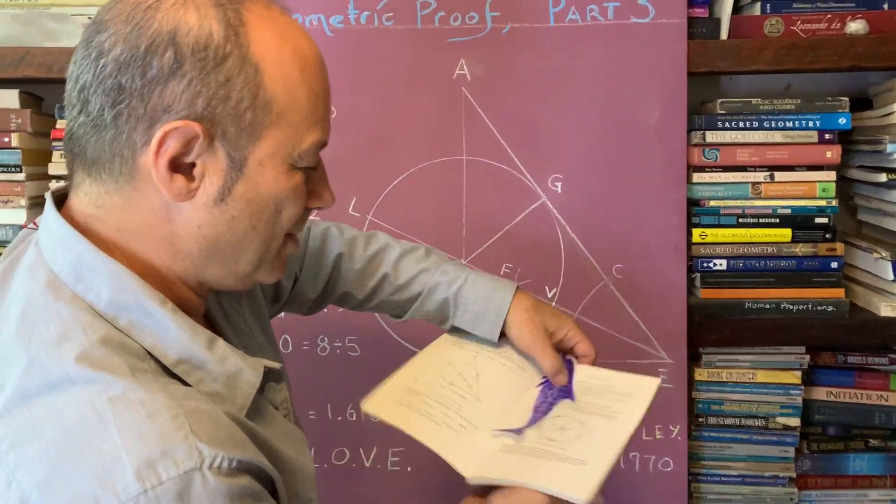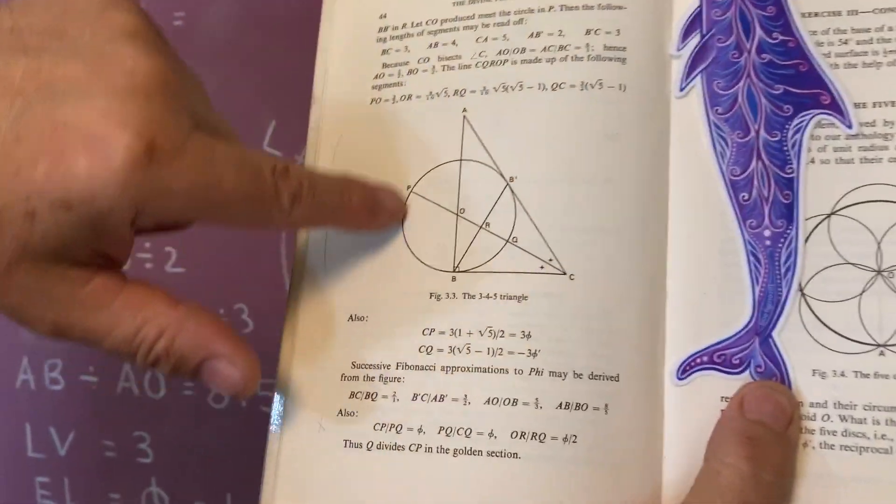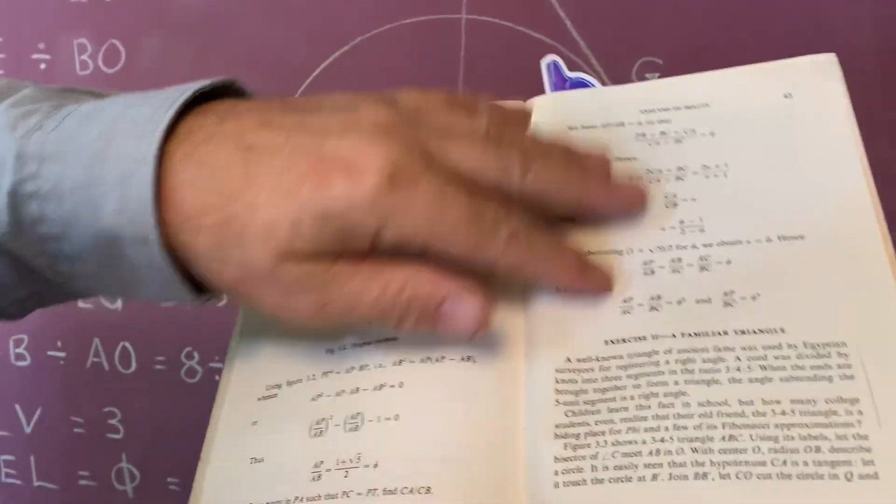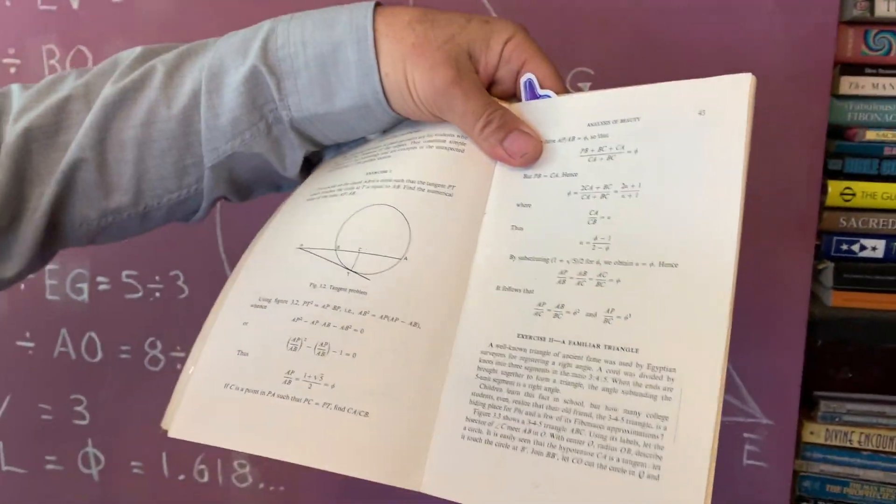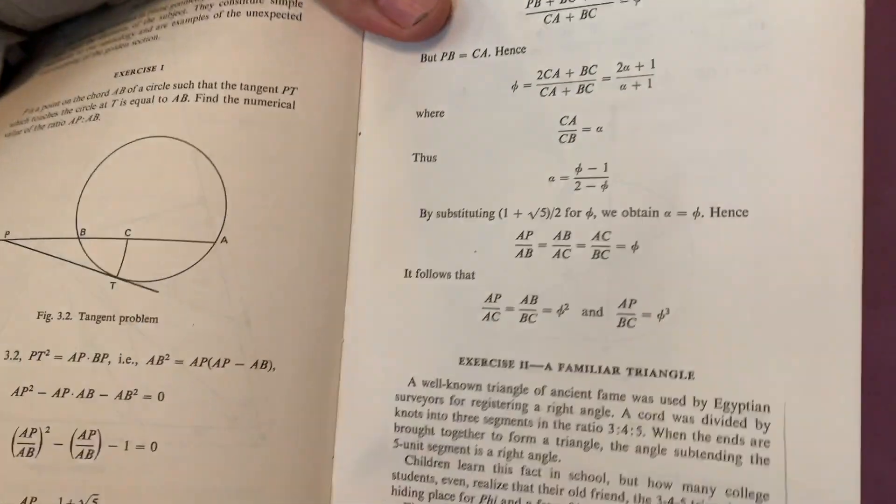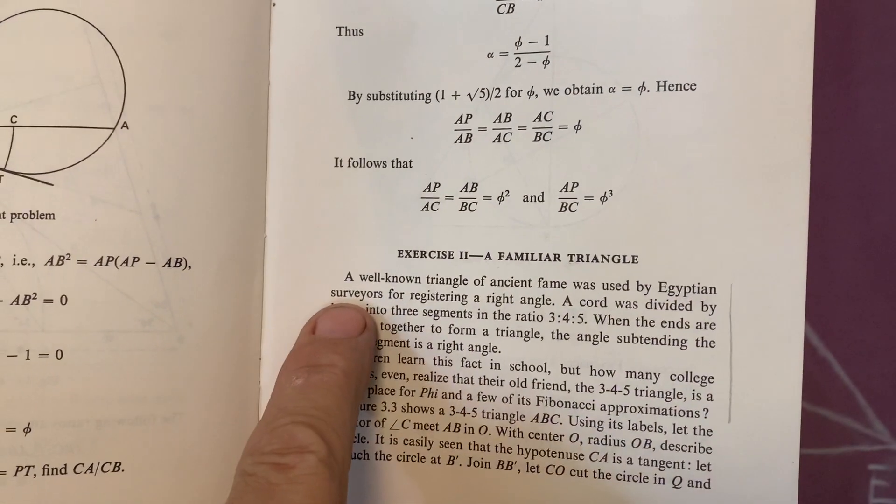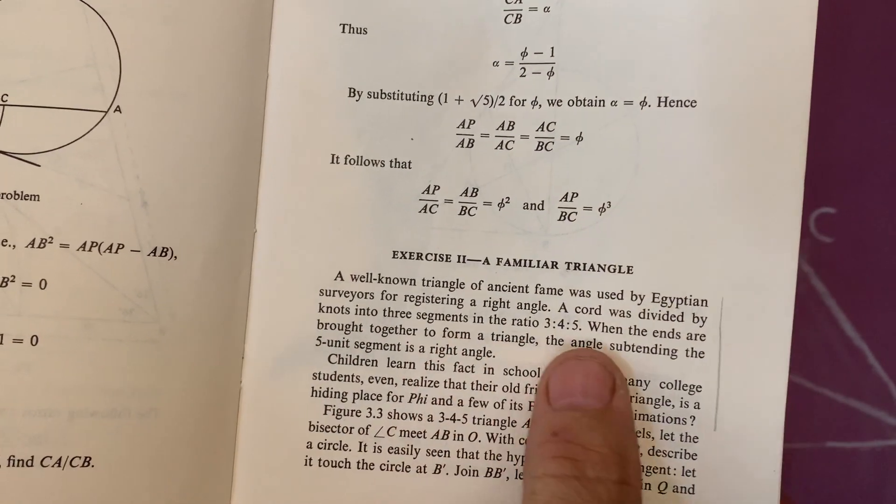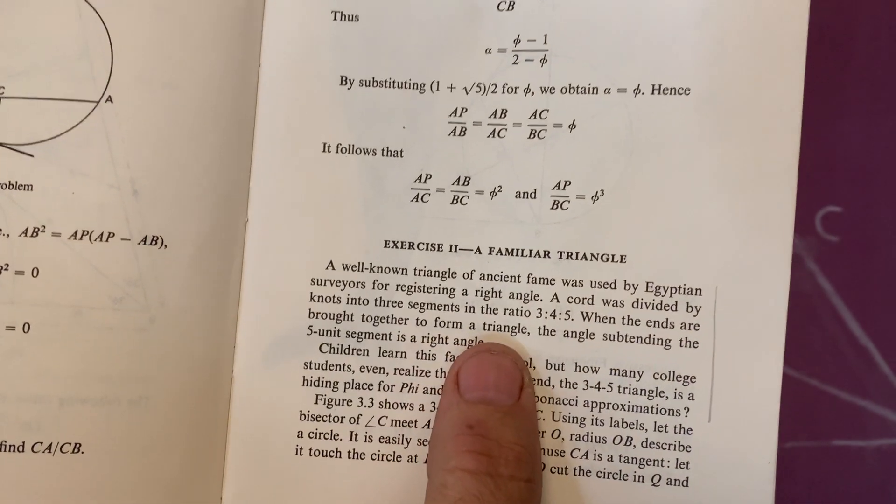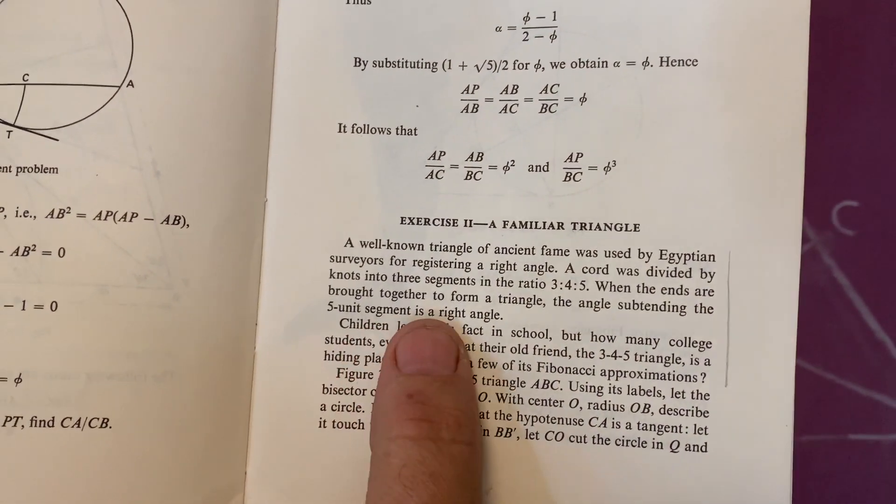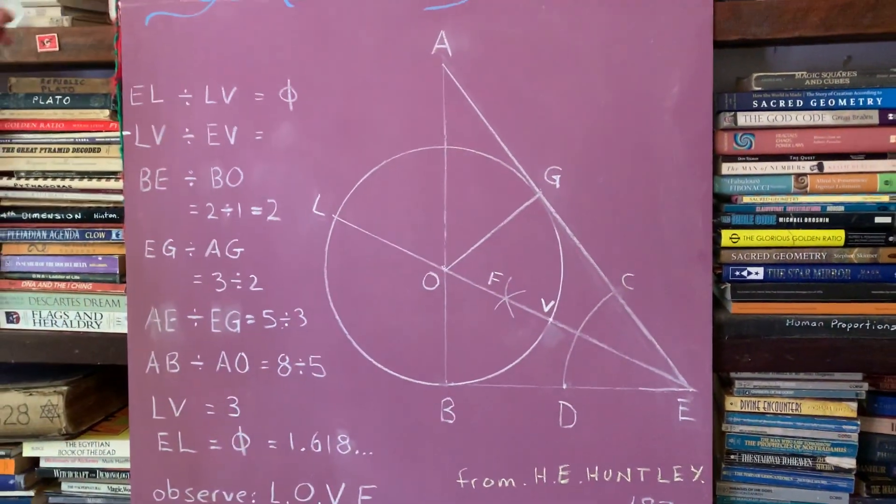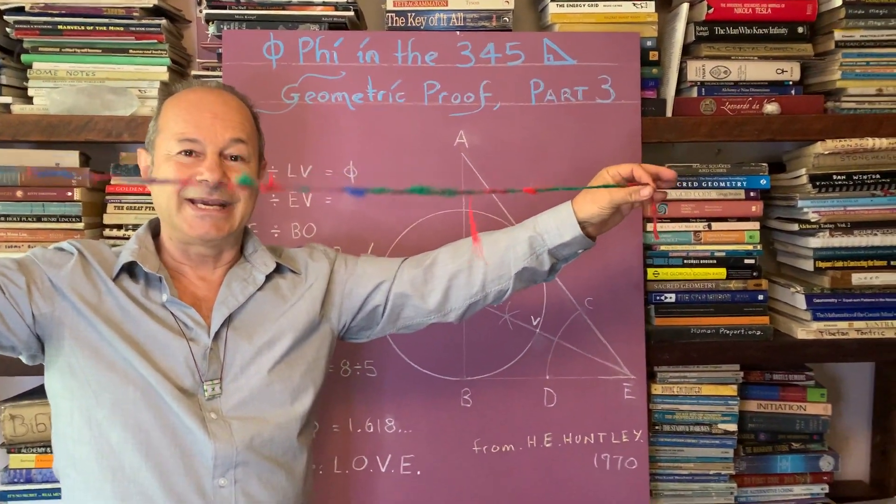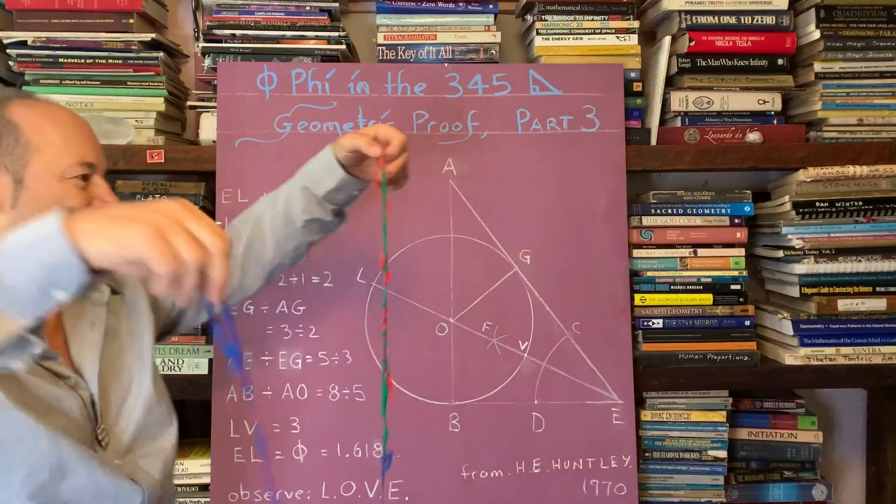The diagram we see here shows the golden ratio inside the 3-4-5 triangle. Huntley's showing the algebra to do it, and he calls it a familiar triangle. A well-known triangle of ancient fame was used by Egyptian surveyors for registering a right angle. A cord was divided by knots into three segments in the ratio of 3-4-5. What I'd like to show is that the ancient Egyptian builders took a string like this. They needed to get a 90-degree angle to build their windows and doors and roofs.